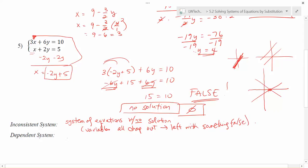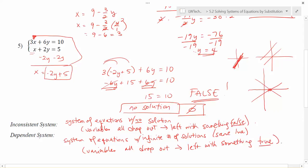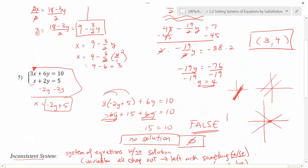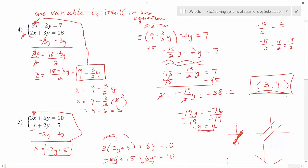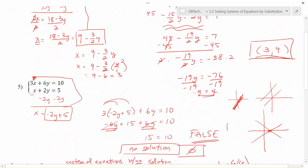A dependent system, on the other hand, is a system of equations with an infinite number of solutions because you end up with the same line. So there's overlap. And this happens when all the variables drop out, but this time you're left with something that's true. So these are the special cases that you get, either an inconsistent system or a dependent system if the variables drop out. Otherwise, you should be able to find an XY solution pair like what we did up here in problem number four. And then that is the only solution that works for both of the equations that were presented in your system.